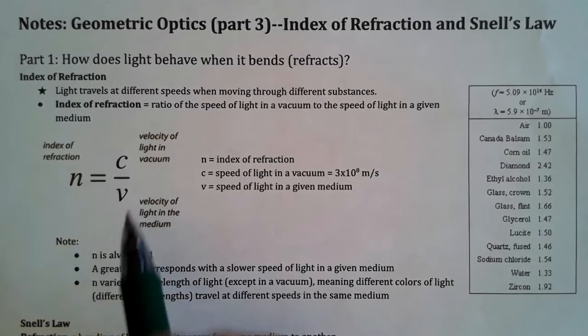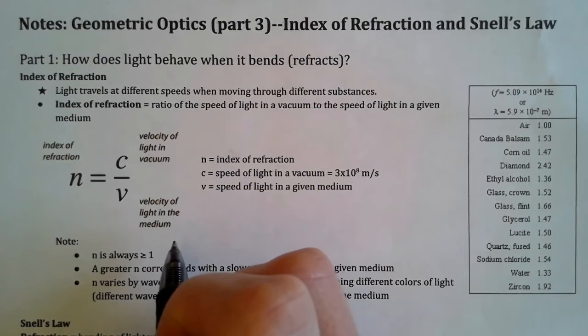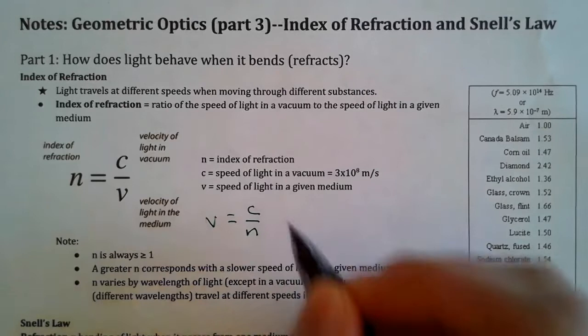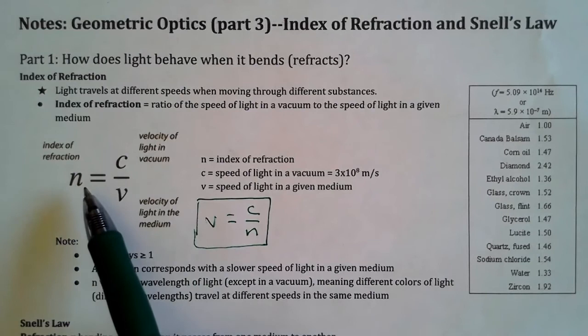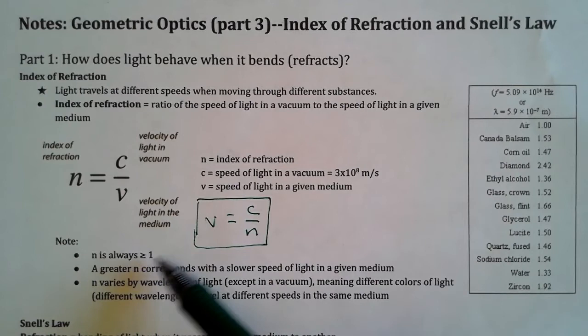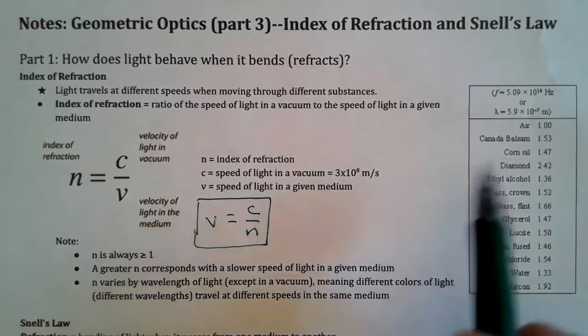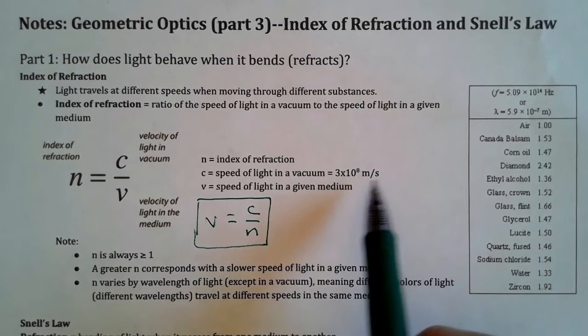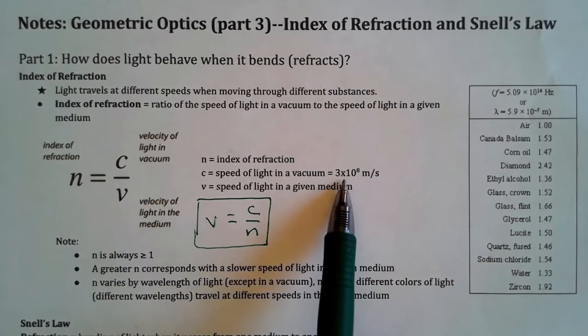If you're asked for the speed of light in the material, you might want to rearrange: if n equals c over v, solving for v gives you v equals c over n. That's more practically how you'll use it. The index is always greater than or equal to 1. For air, the index of refraction is essentially 1, so light in air is going at c — three times ten to the eighth meters per second. n always greater than or equal to 1 means light can go slower than c, but it's never going to go faster.